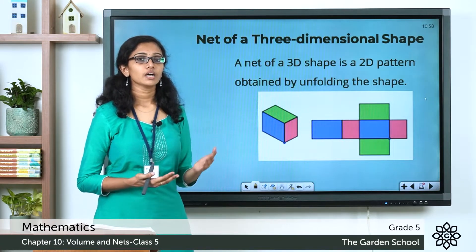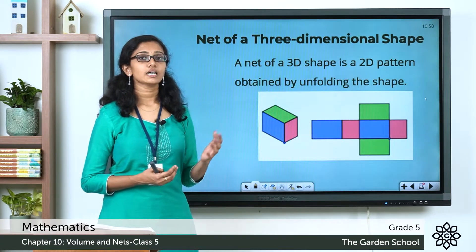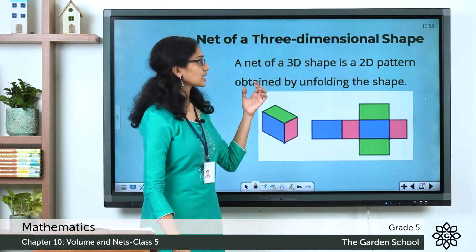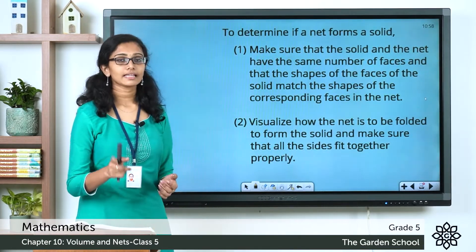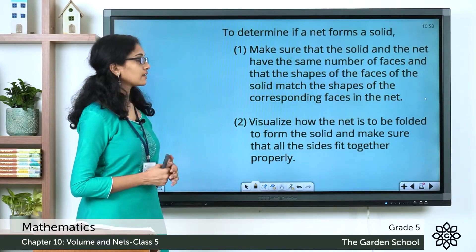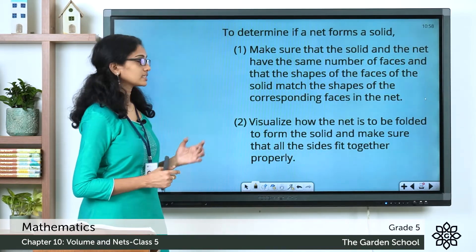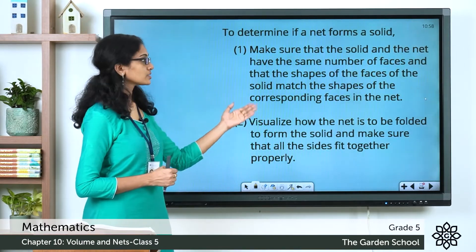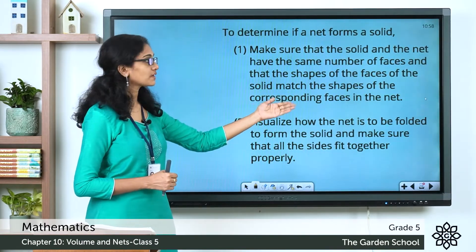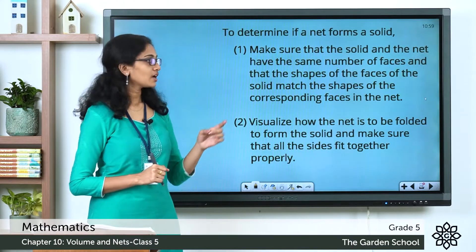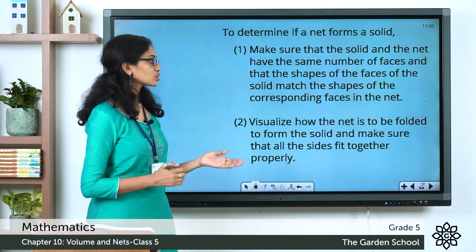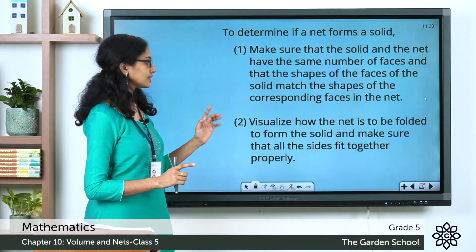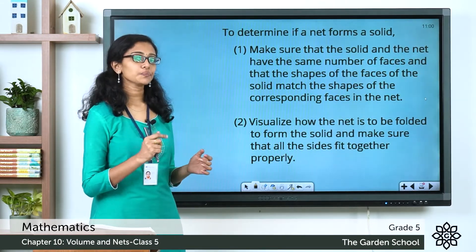So how do we find out if a given net is the net of a solid? To determine if a net forms a solid, make sure that the solid and the net have the same number of faces, and that the shapes of the faces of the solid match the shapes of the corresponding faces in the net. Then visualize how the net is to be folded to form the solid and make sure that all the sides fit together properly.